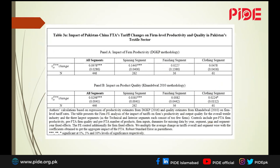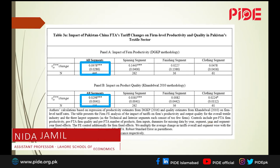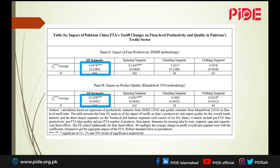Looking at this empirically, we examine the impact of the tariff change under the FTA. Panel A looks at productivity for all segments of the entire textile sector — we see that productivity and quality have gone up. For the spinning, finishing, and clothing segments — the top three segments Pakistan actually exports — the least protected segment, spinning, contributes most towards productivity and quality improvement when we break down the analysis into different segments.